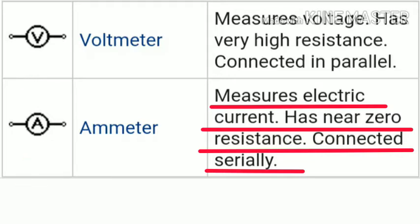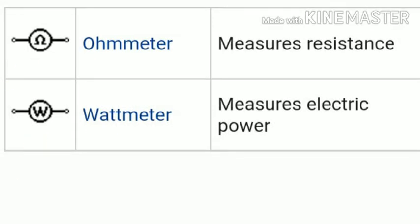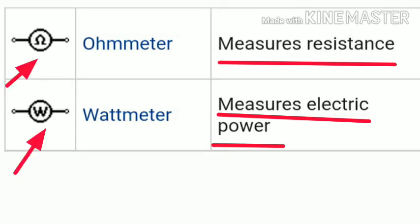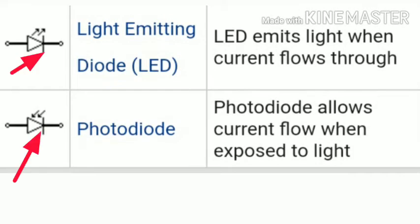The next symbols are the ohmmeter and wattmeter. The ohmmeter measures resistance, and the wattmeter measures electrical power. We connect the ohmmeter when we need to measure resistance, and the wattmeter when we need to measure electrical power. The wattmeter can be connected for single-phase lines and also for three-phase systems.